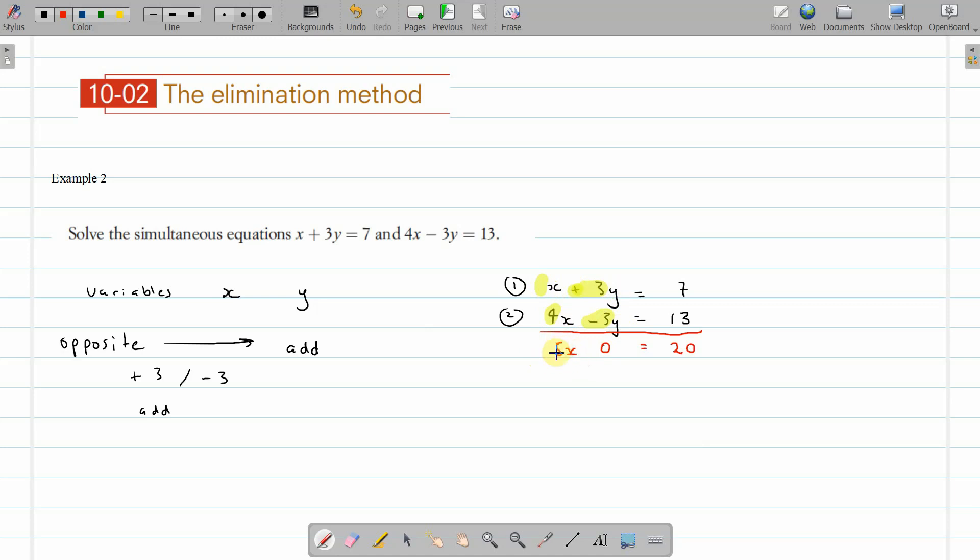So now we've just left with the x variable, which is what we want, 5x equals 20. And from then, we can simplify to x, we divide by 5, x equals 4. We have a solution, one part of the solution, x equals 4.